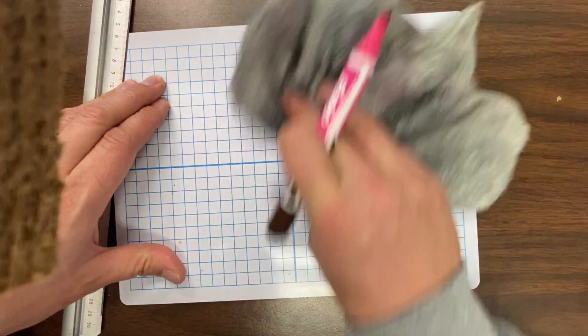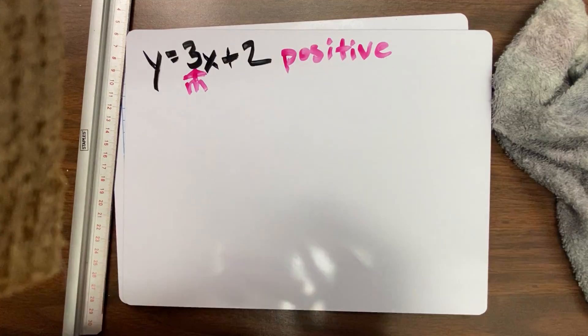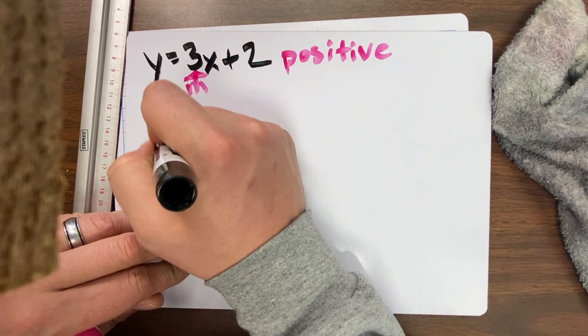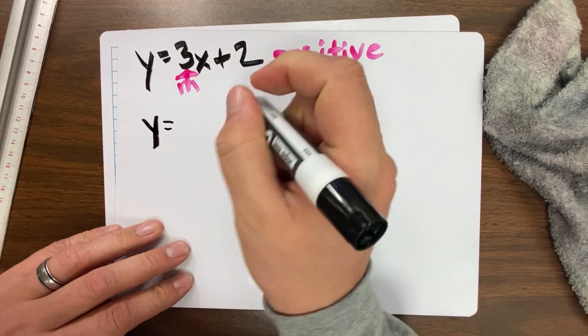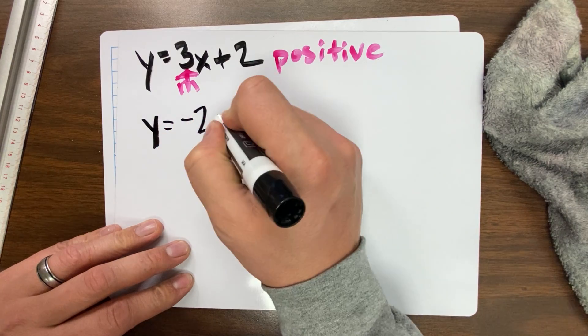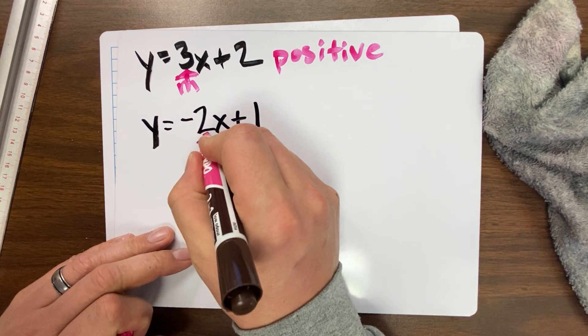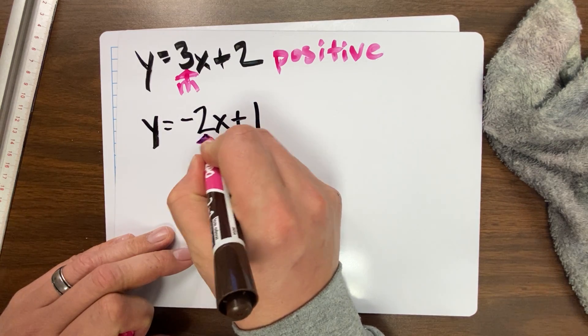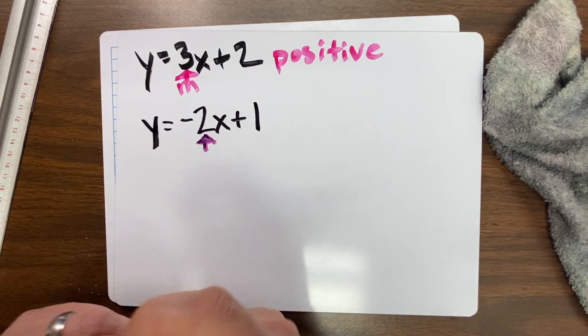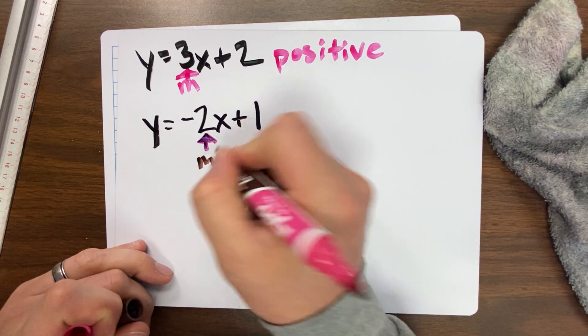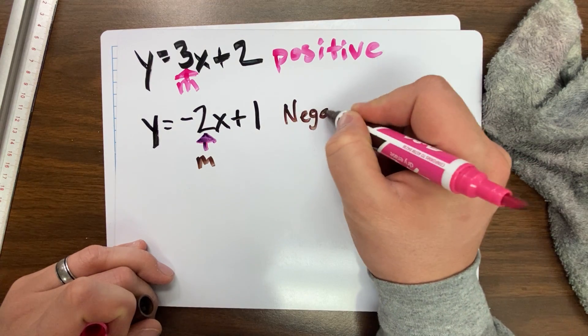Next one. If I had y equals negative 2x plus 1. Again, this right here is always the slope. That's m. And so this one is a negative slope.